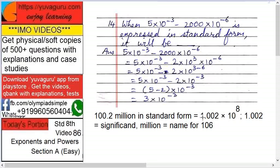This only one digit is important. Now 1.002 is significant and remaining is in millions. Million name for 10.